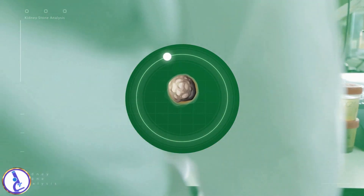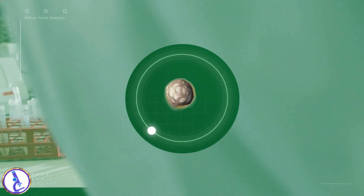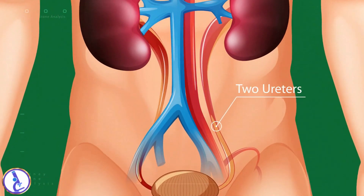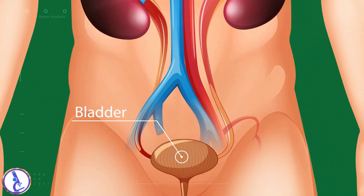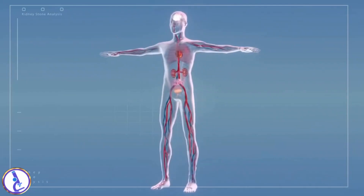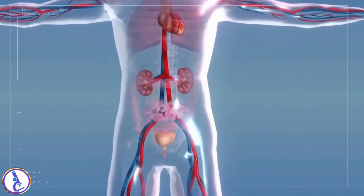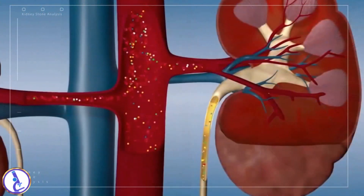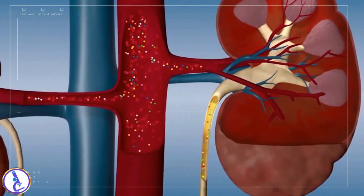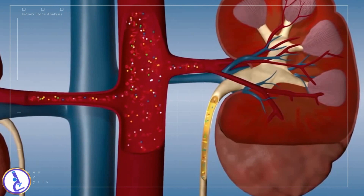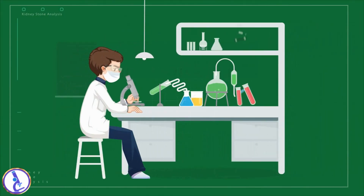The kidneys are part of the urinary tract, which also consists of two ureters, the bladder, and the urethra. The kidneys filter waste out of the blood and produce urine, which is transported from the kidneys to the bladder through the tube-like ureters. Urine is eliminated from the bladder through the urethra as a continual daily process.